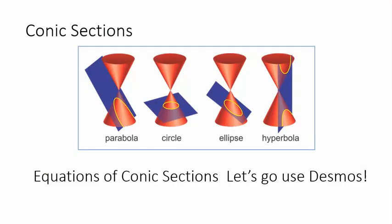Technically, a line could also be considered a conic section — if the plane just touches the edge of the cone you'd get a line. Similarly, a point could be a conic section if the circle plane moves up to just touch the tip of the cone. But generally when people say conic sections, they mean those four shapes.